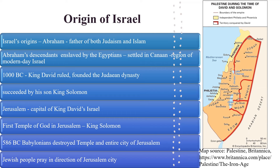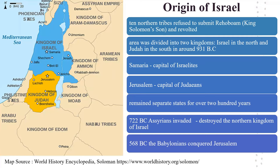In Biblical times, Jewish people who could not make a pilgrimage to the city were supposed to pray in the direction of it. After Solomon's death, the ten northern tribes refused to submit to his son Rehoboam and revolted. In about 931 BC, the area was divided into two kingdoms — Israel in the north and Judah in the south. The Israelites formed their capital in the city of Samaria and the Judeans kept their capital in Jerusalem. These kingdoms remained separated states for over 200 years.